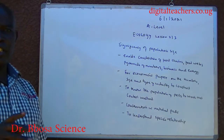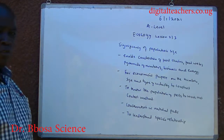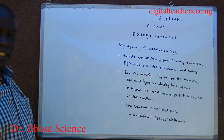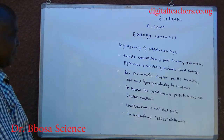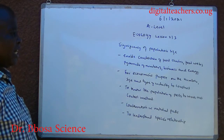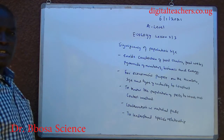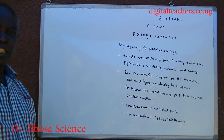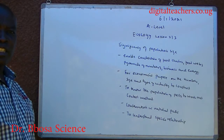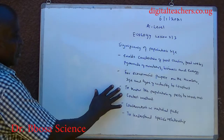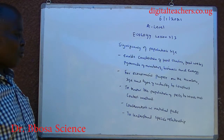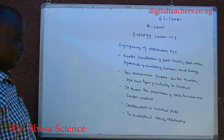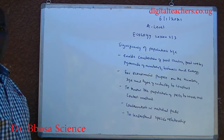Significance of population size: it enables construction of food chains, food webs, pyramids of numbers, biomass and energy. For economic purposes — determining the number, size and type of industry to construct. For example, to plan the fish processing industry, you should know how much fish you have in a lake. Also, to know the population of pests, to work out control methods, for conservation in national parks, and to understand species relationships.